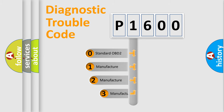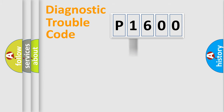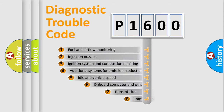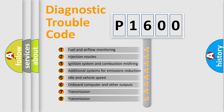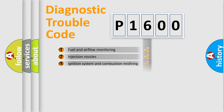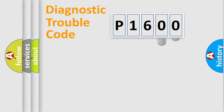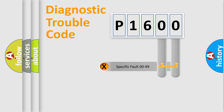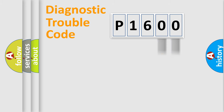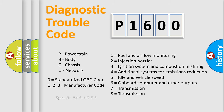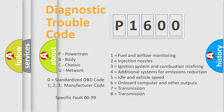If the second character is expressed as zero, it is a standardized error. In the case of numbers 1, 2, or 3, it is a more specific expression of a car-specific error. The third character specifies a subset of errors. This division is valid only for the standardized DTC code. Only the last two characters define the specific fault of the group, and this division is valid only if the second character is expressed by the number zero.